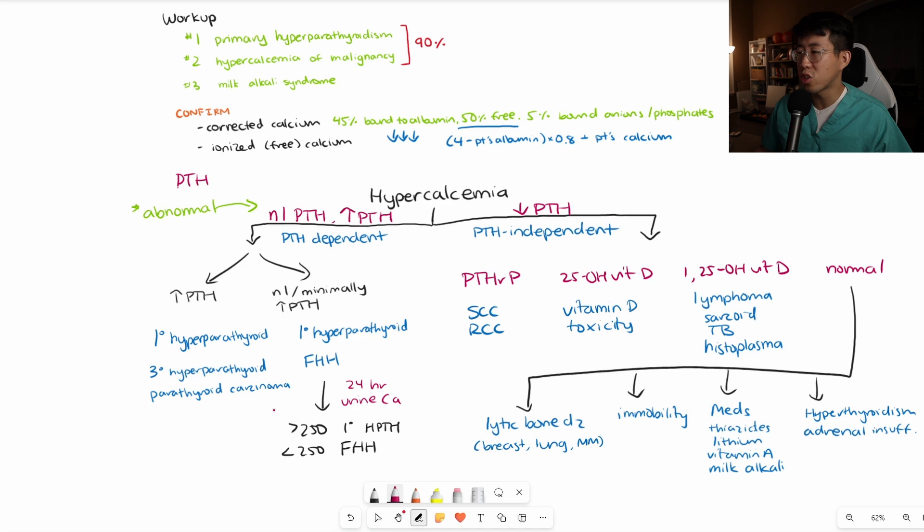If your initial pass workup is negative, you're going to do some additional workup. For multiple myeloma, you'll get an SPEP, UPEP, and serum-free light chains. For immobility and medications, you're going to go off the history. For vitamin A, you can check a vitamin A level. For hyperthyroidism, you can check the TSH. You could check a cortisol level if you're suspicious of adrenal insufficiency.